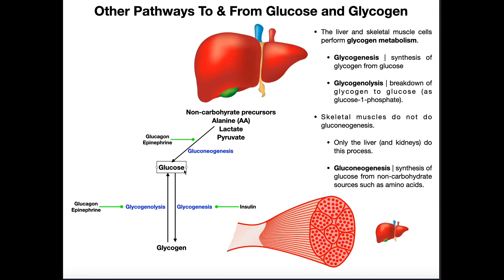Now, what happens if our blood glucose becomes high? Blood glucose would typically become high after a meal — you eat a meal with carbohydrates, and that glucose is absorbed through the GI tract and ends up in your blood, raising blood glucose. We don't want blood glucose going up too much because we can be at risk for hyperglycemia, and if it remains elevated for long periods of time, diabetes. So we need to get that glucose into cells, remove it from the blood. One good way is by transporting the glucose into cells and building it back up into glycogen.